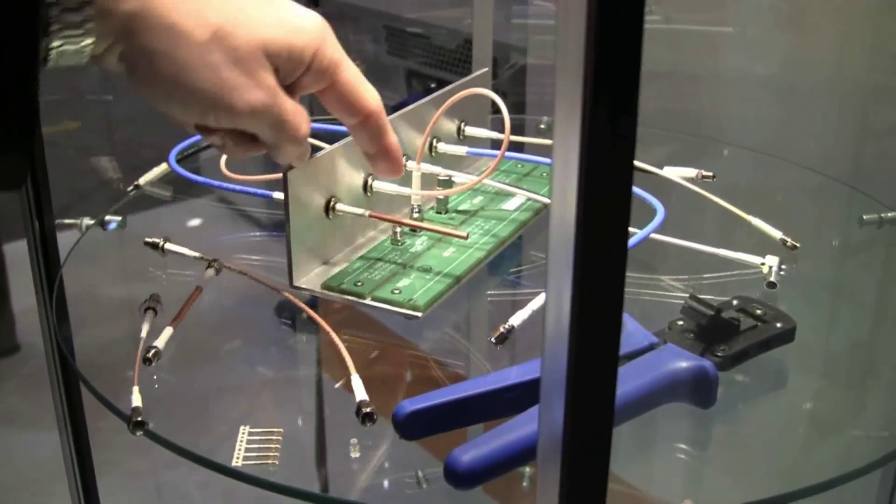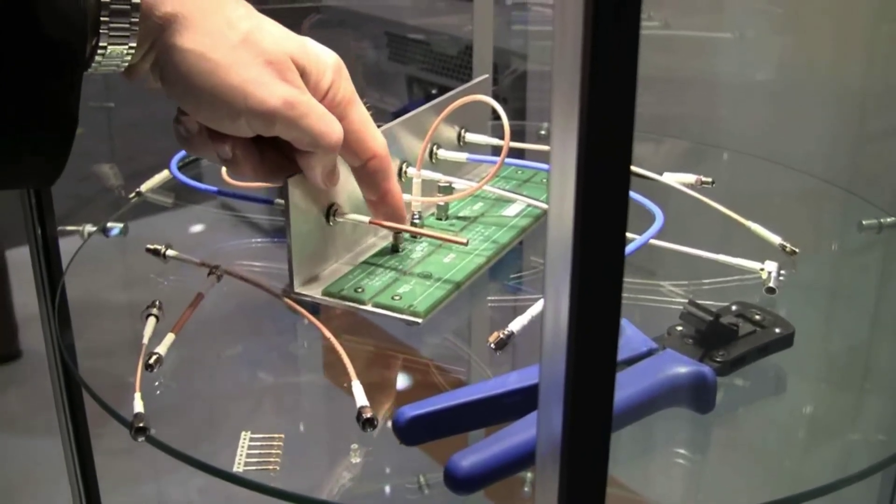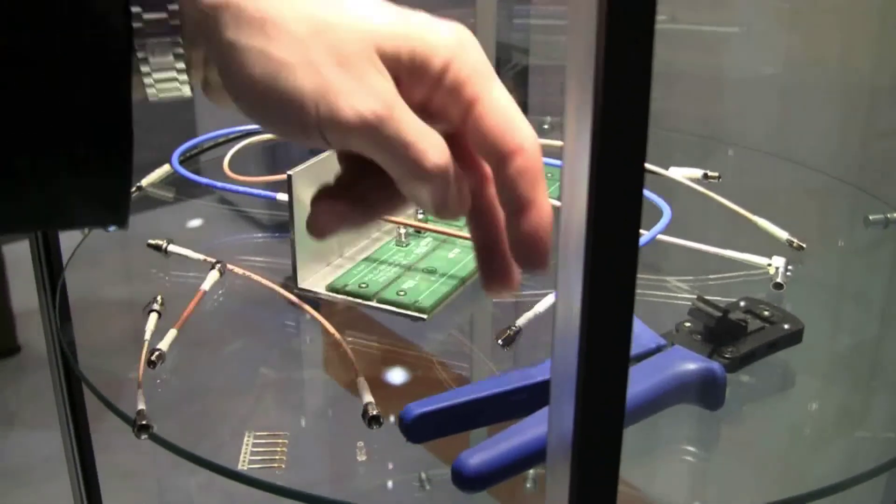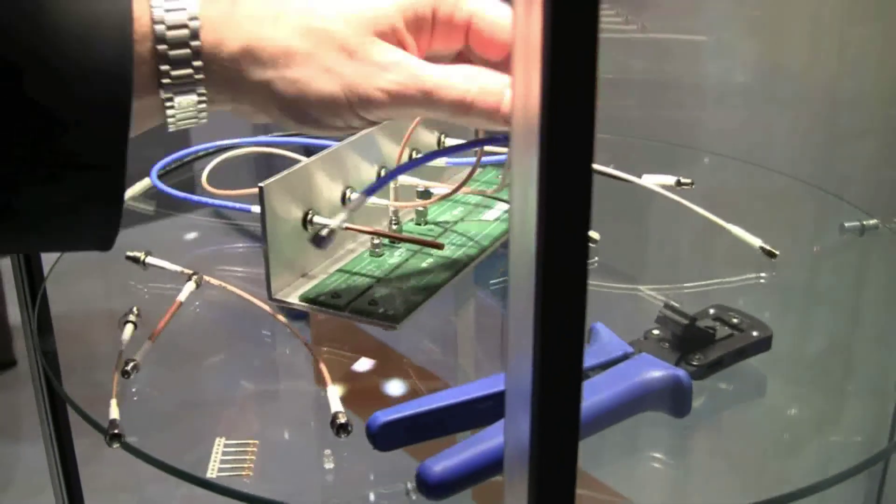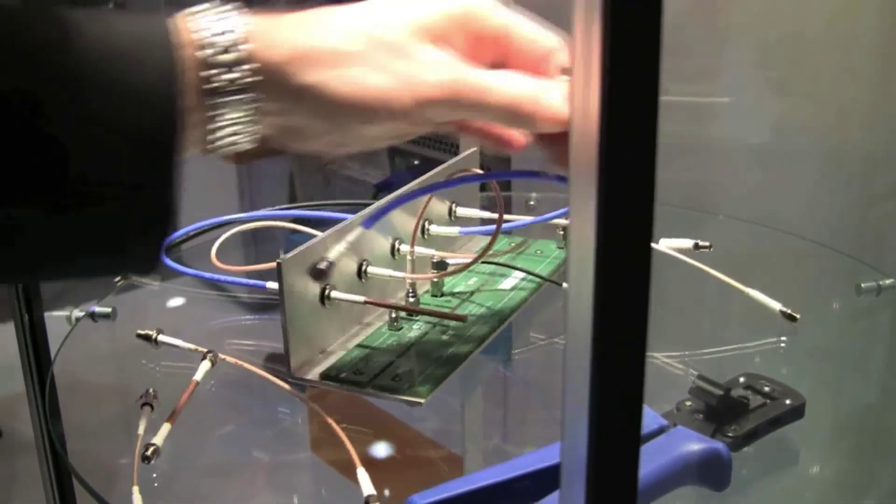On the printed circuit board you can see an example of the vertical board mount SMA and on the ends here you can see for instance a right angle cable plug.